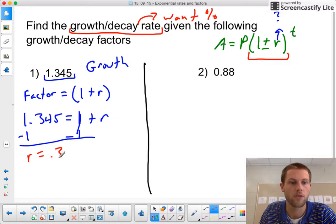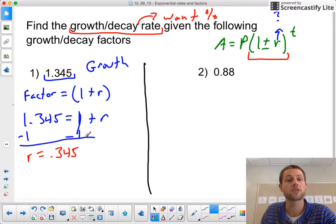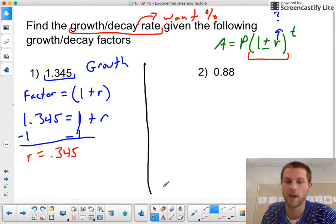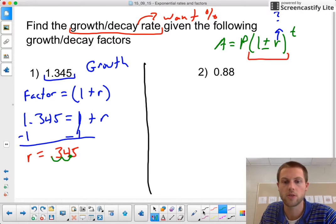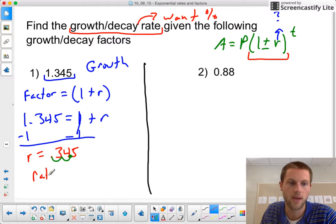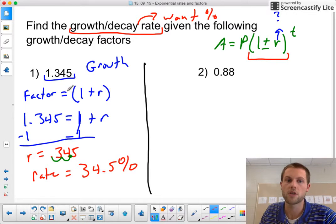So our rate is going to end up being 0.345. Now that's a rate as a decimal, we need a percentage out of this. So the only thing we need to do now is move our decimal place over two places to the right, and our final rate as a percentage is going to be 34.5%.